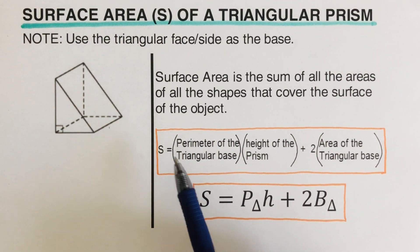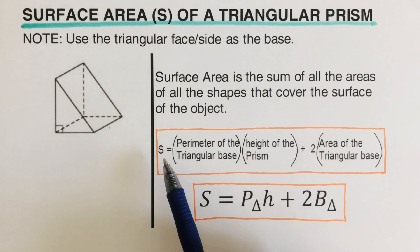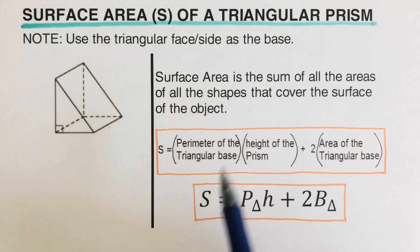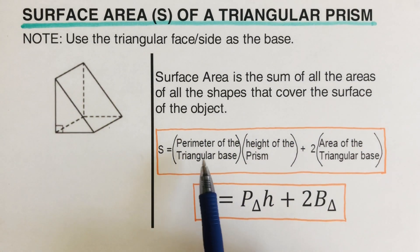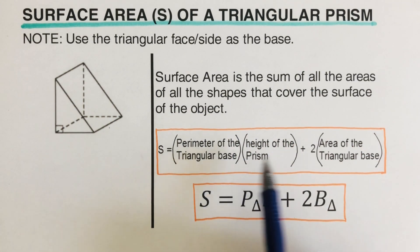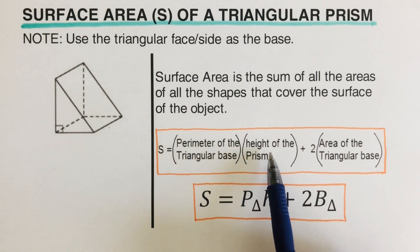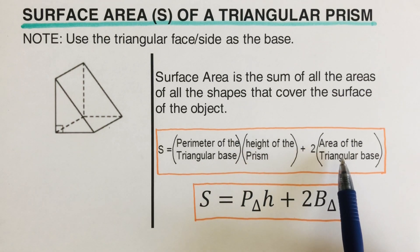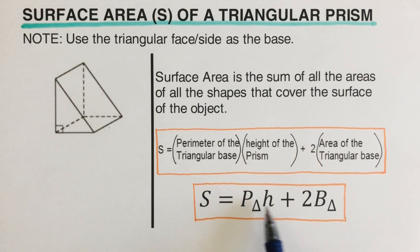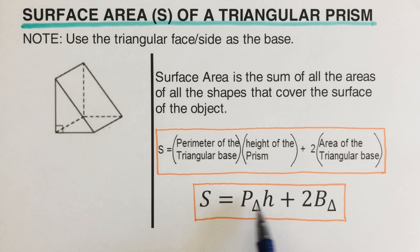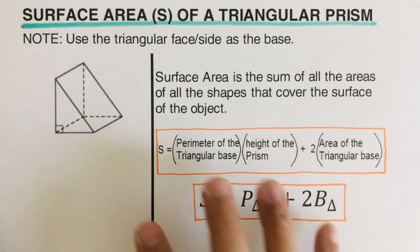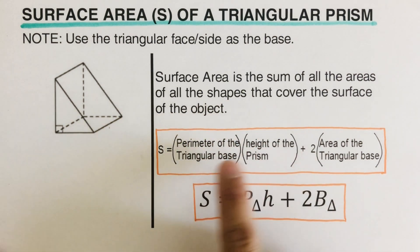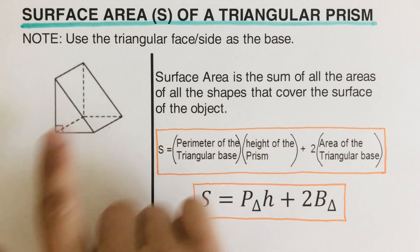We have the formula for determining the surface area of a triangular prism. First we have the perimeter of the triangular base, the height of the prism, and then the area of the triangular base. I represented these with letters here. Before we explain where each part is in the picture, let me clarify the setup.